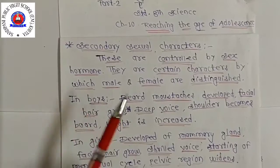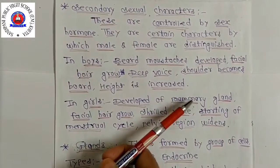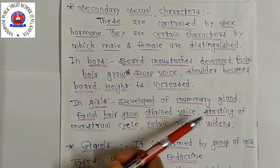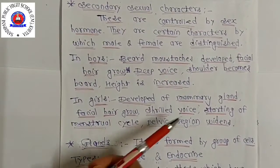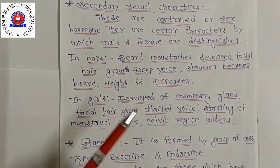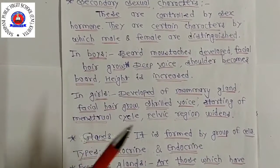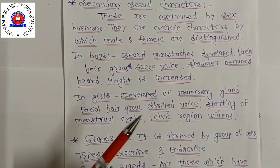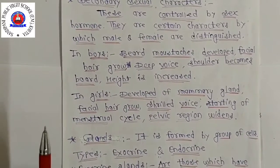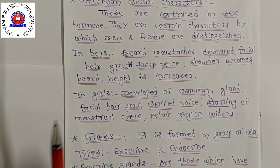In girls, the mammary glands develop for the purpose of feeding and producing milk. Facial hair grows slightly. The menstrual cycle begins, the pelvic region widens, hair grows under the armpits and pubic region, mammary glands develop and enlarge, hips broaden, and extra fat is deposited in various parts of the body like hips and thighs. The fallopian tubes, uterus and vagina also enlarge.